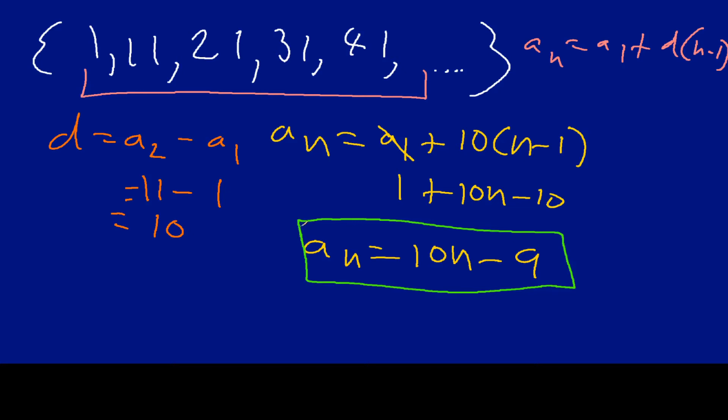And so, we can check this if we really wanted to. So, if I put in 2, for example, 10 times 2 is going to be 20, and then 20 minus 9 will be 11.